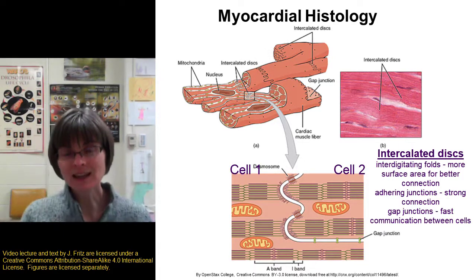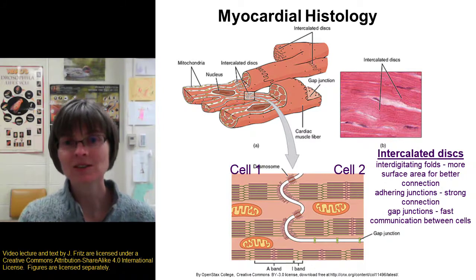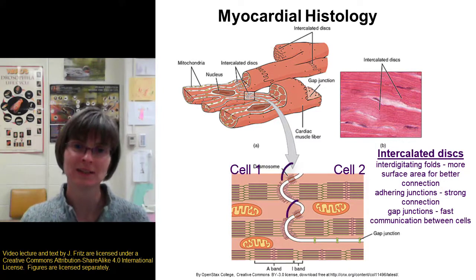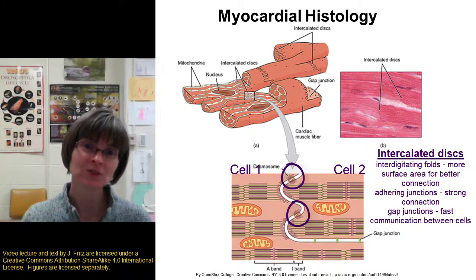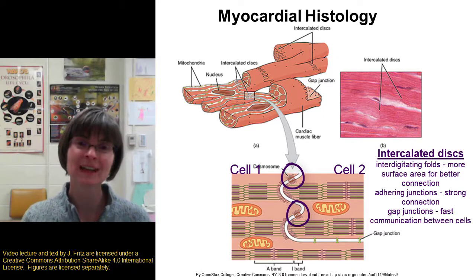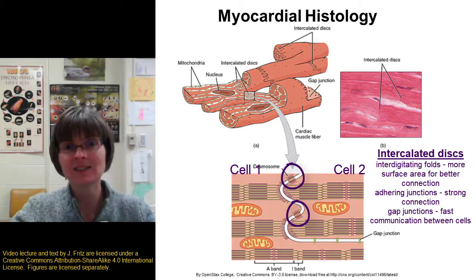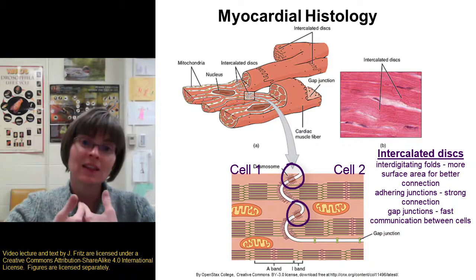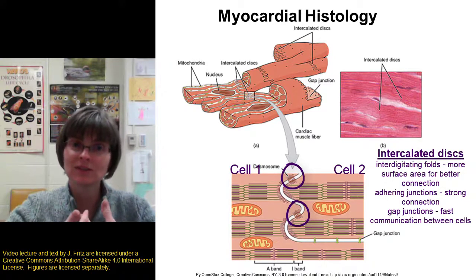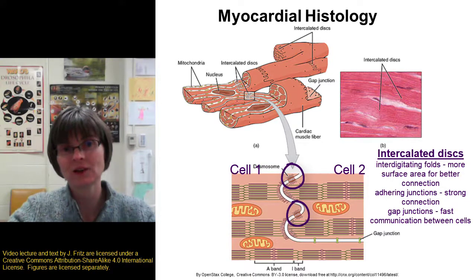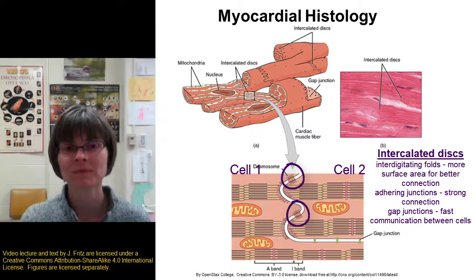The second thing we have are adhering junctions, which provide a strong connection between cells. They connect the two cells together and connect to the cytoskeleton of the cells, so that the connection stays intact even when the cells are contracting and exerting a lot of force.